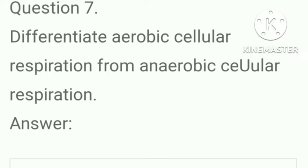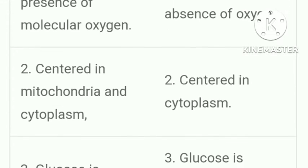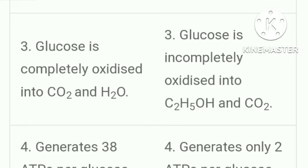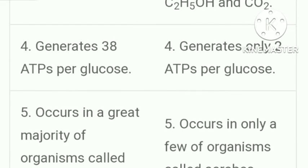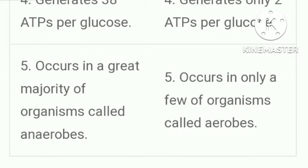Differentiate aerobic cellular respiration from anaerobic cellular respiration. Aerobic cellular respiration occurs in the presence of molecular oxygen and is centered in mitochondria and cytoplasm; glucose is completely oxidized into carbon dioxide and water; it generates 38 ATPs per glucose. Anaerobic cellular respiration occurs in the absence of oxygen and is centered in the cytoplasm; glucose is incompletely oxidized into C₂H₅OH and CO₂; it generates only 2 ATPs per glucose.